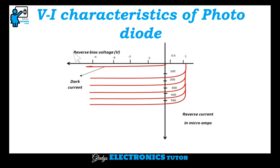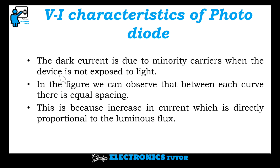This is the V-I characteristic of photodiode. This is the reverse bias voltage which is applied. This is the dark current when no bias is applied. The dark current is due to minority carriers when the device is not exposed to light. We can observe that between each curve there is equal spacing, because the increase in current is directly proportional to the luminous flux.